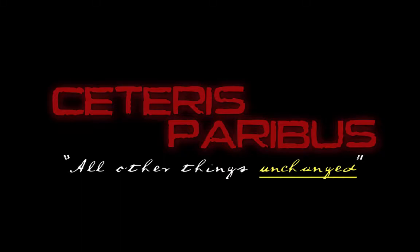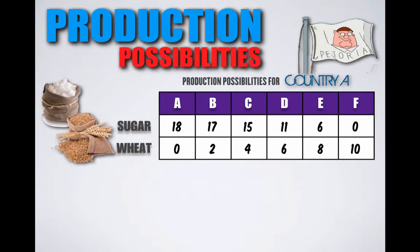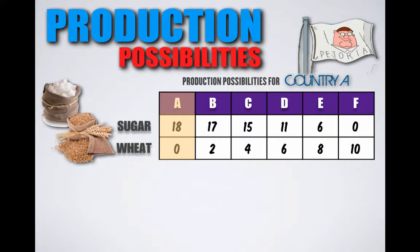With that out of the way, let's get back to production possibilities. The function listed gives you six different production possibility combinations of sugar and wheat that Petoria can produce at any given time. It is only possible for Petoria to produce at one combination at a time. At combination A, Petoria can produce 18 units of sugar and no units of wheat — all of its resources are allocated toward sugar production at point A.